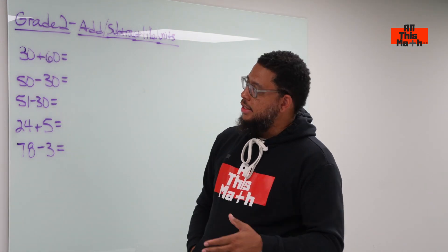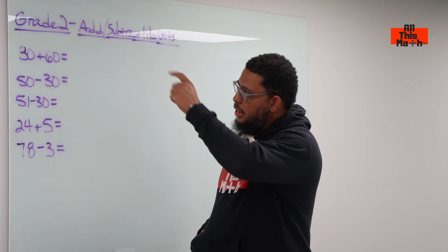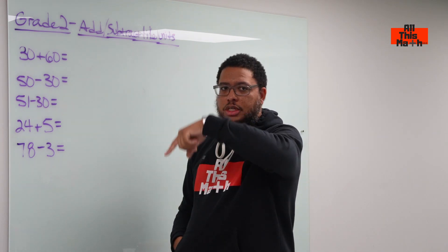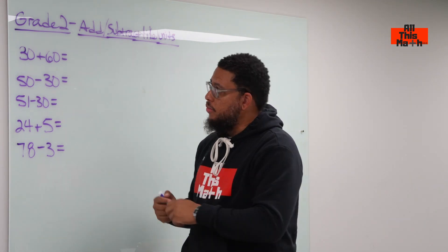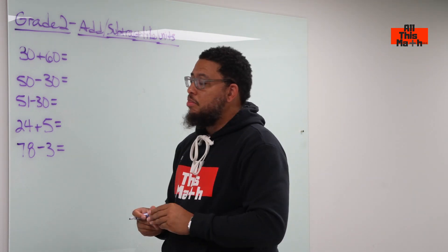The first one says 30 plus 60. Now, instead of just writing 30 over 60 and using the standard algorithm, we're going to do this a different way. We're going to think of this in terms of place value.